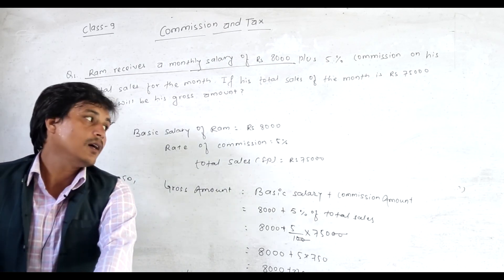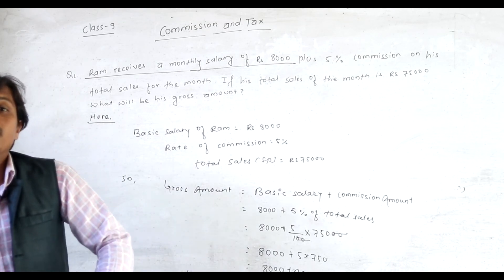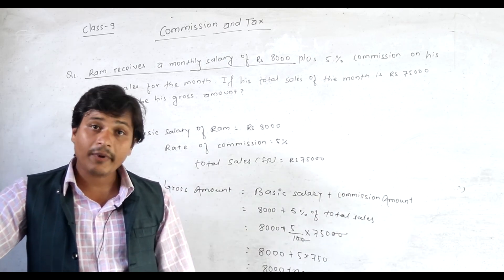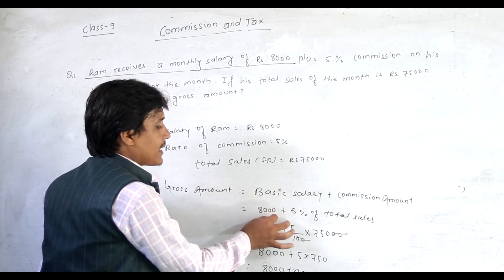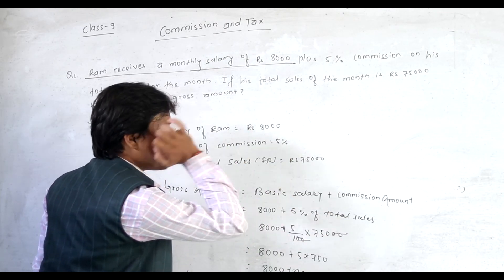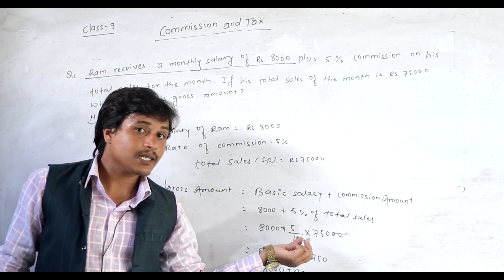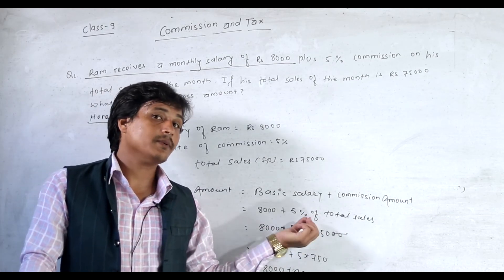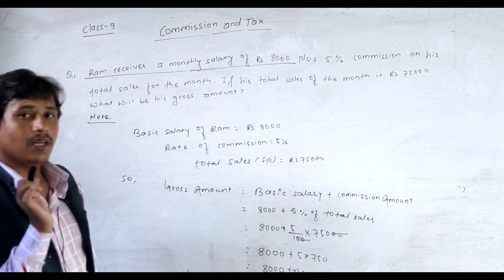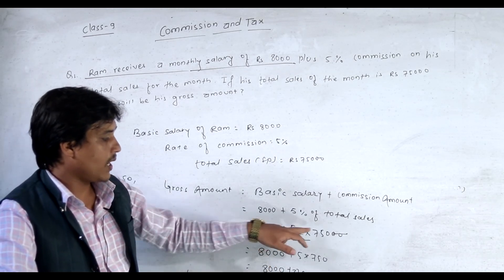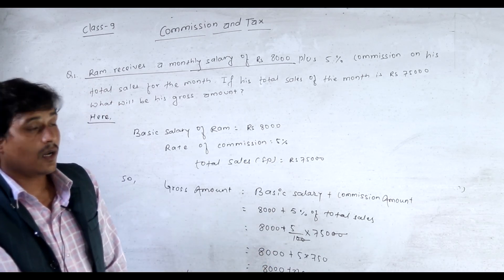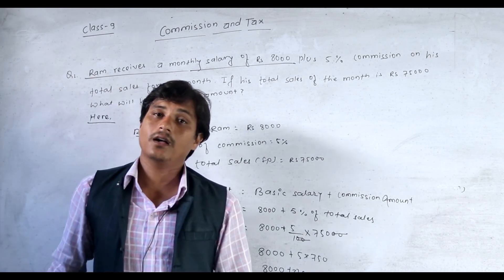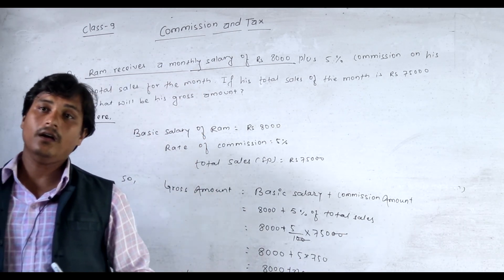Commission amount is the commission percentage of the total sales. The commission percentage is 5 percent of total sales, which gives us the commission amount. So: basic salary 8000 plus 5 percent of the total sales 75000. Percentage is easily changed into fraction by dividing 100, and 'of' means multiply. So 8000 plus 5 into 750, that is 8000 plus 3750, equals Rs 11750. That is his gross amount for the month.